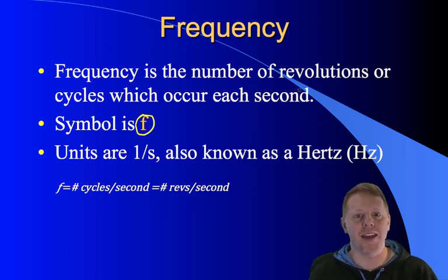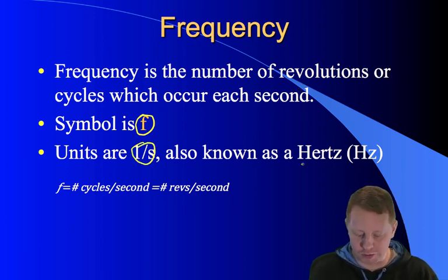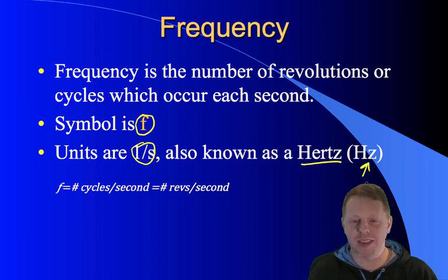For example, if I can eat two donut holes in one second, my frequency of eating donut holes would be two per second. The units then of frequency are one over seconds per second, which is also known as a hertz, with the abbreviation capital HZ. Frequency, lowercase f, the number of activities, cycles, revolutions per second, units are hertz.